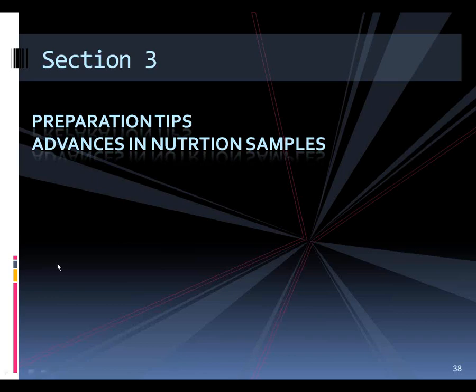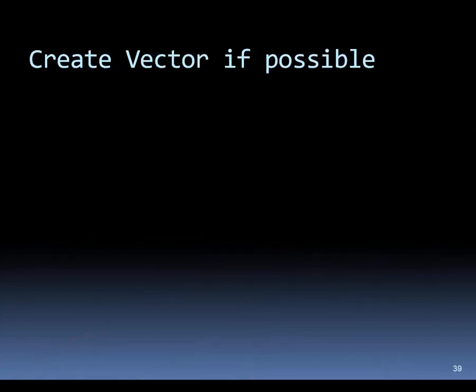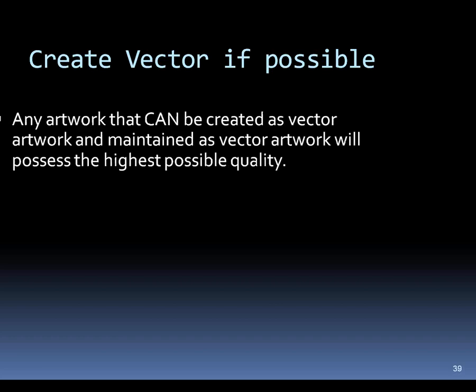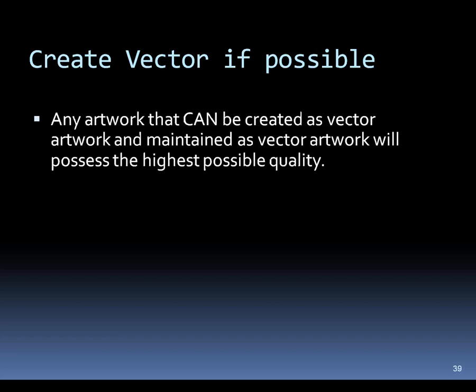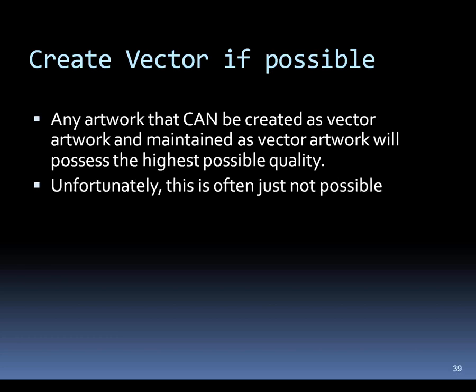The first tip is: if possible, create vector figures. Any artwork that can be created as vector and maintained as vector throughout graphics processing will be processed with the highest possible quality. Simple rule—vectors are wonderful. But a lot of things cannot be made vector. When you're scanning something or doing microscope capture, there's no way to turn it into a vector, so it's just not always possible.